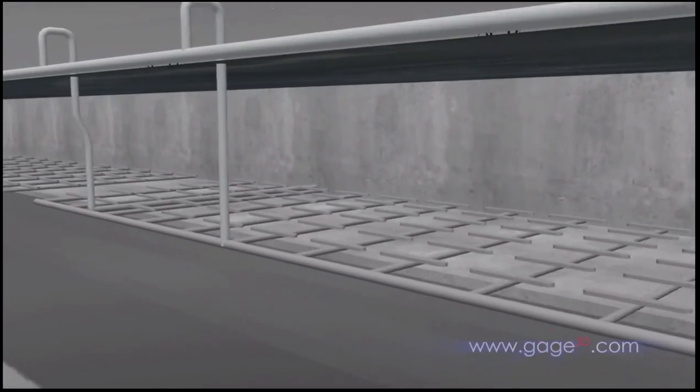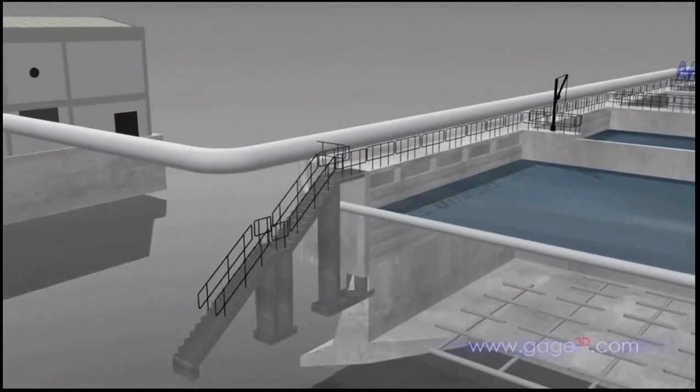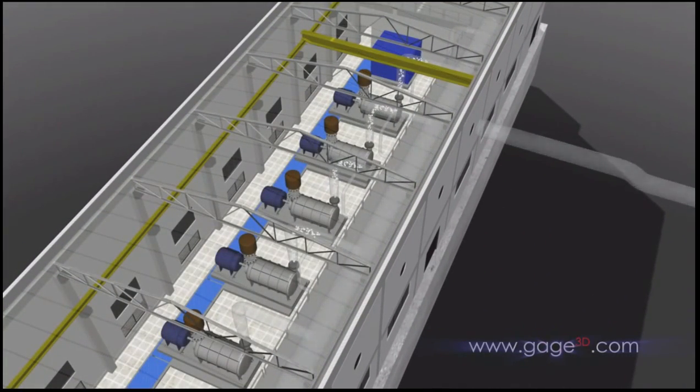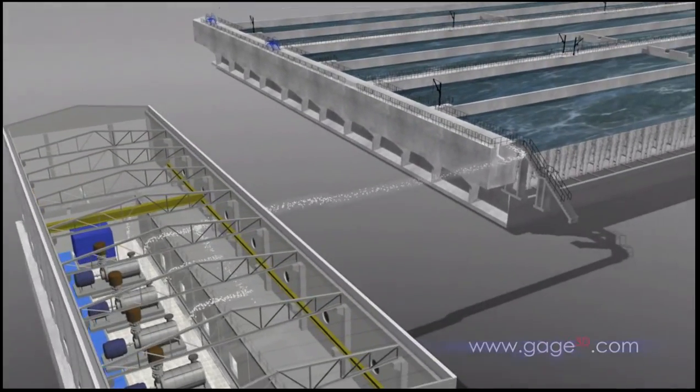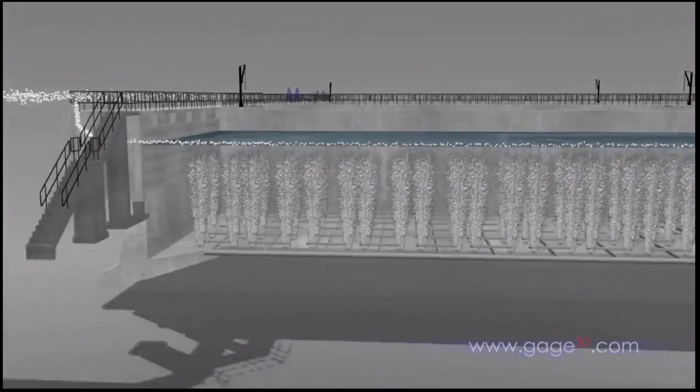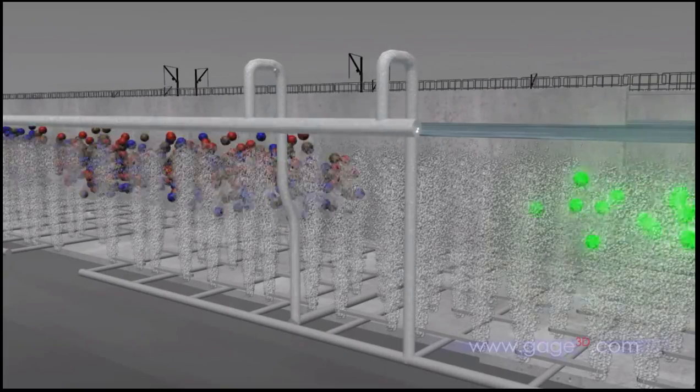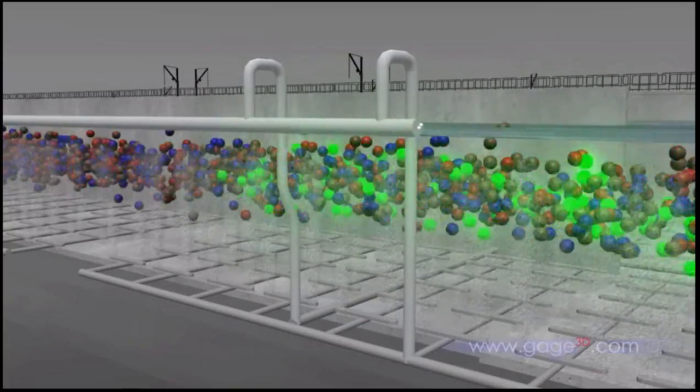The first secondary treatment stop is the aeration basin. Unlike primary treatment, this part of the treatment process relies on biological action rather than physical separation. Blowers generate oxygen that is distributed through a network of pipes into the aeration basin. The oxygen generated by the blowers is used by hungry bacteria, as shown in green. They feed on the solids, reducing their volume and removing nutrients.